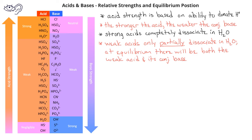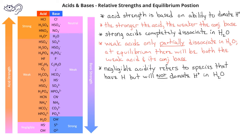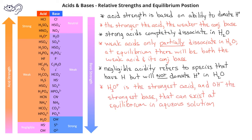When we say a species has negligible acidity, that refers to a substance that has a hydrogen but will not donate the hydrogen ion in water. Its conjugate base will be a strong base. Another item to note is that the hydronium ion is the strongest acid that can exist at equilibrium in aqueous solution, and the hydroxide ion is the strongest base that can exist at equilibrium in aqueous solution.